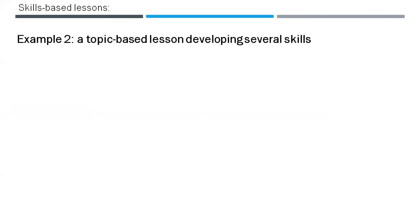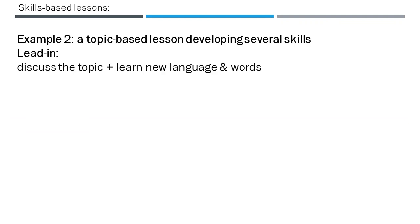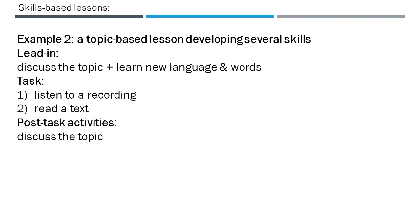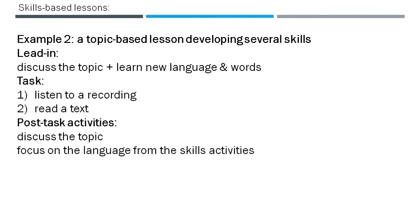Example number two — a topic-based lesson developing several skills. A lead-in would be speaking about the topic plus doing related language work. Then a task or number of tasks like listening to a recording about the topic or reading a text about the topic. Then post-task activities: discussing the topic, focus on language of the topic, and for example writing a composition about the topic.